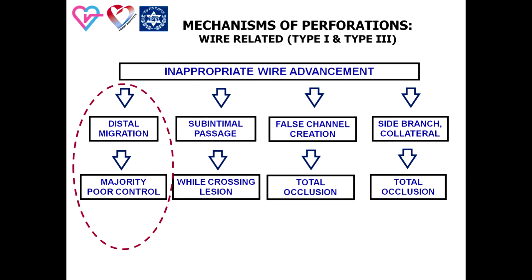Distal migration of the wire with penetration through the vessel is, as a rule, a result of insufficient fixation of the wire during insertion of the intracoronary device. The risk is augmented in patients with lesions resistant to insertion, or devices with limited crossability such as aspiration devices, rotablator, and so on. It occurs more frequently after use of hydrophilic guide wires with a low coefficient of friction.